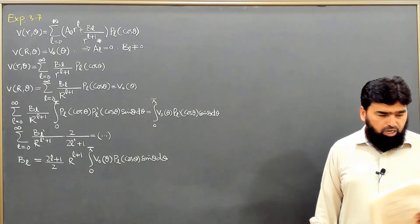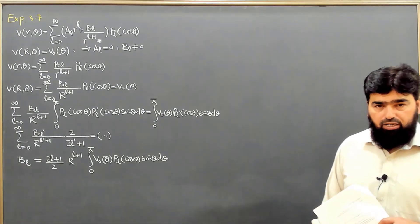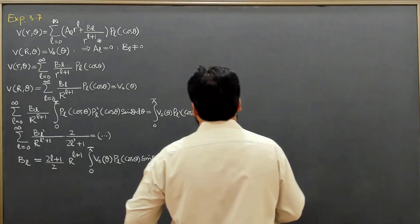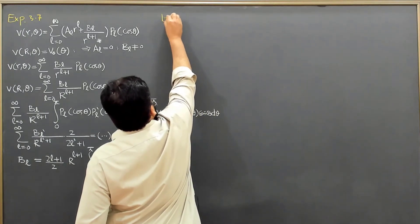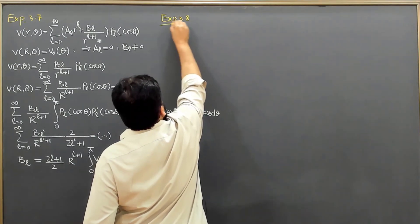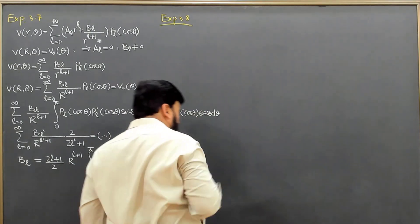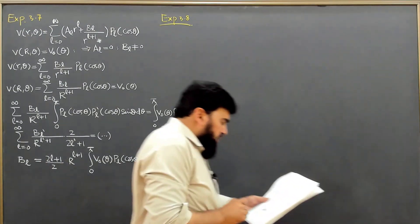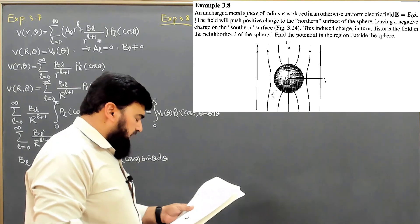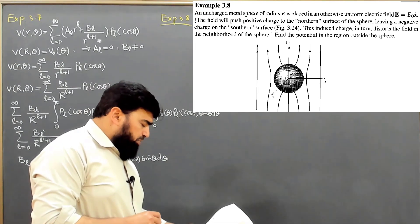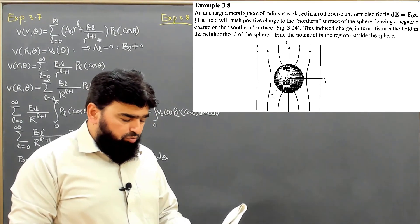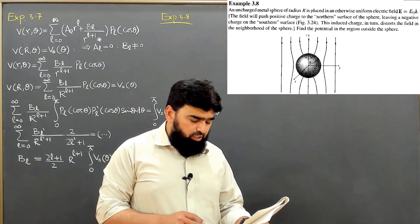It is time to start with another interactive example — this is Example 3.8, which is very comprehensive. Let me read the statement. An uncharged metal sphere of radius R is placed in an otherwise uniform electric field E, which is equal to E₀ in the Z direction.